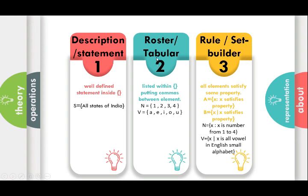The second form is roster or tabular form. Here we list all the elements of the set separated by commas. For example, N = {1, 2, 3, 4}. V is a set of vowels, which consists of characters E, I, O, U.